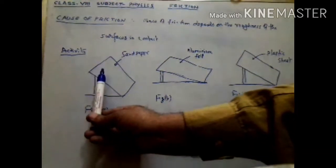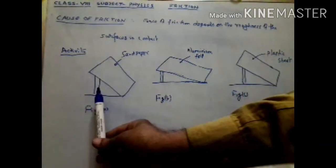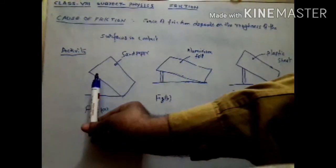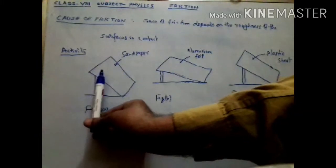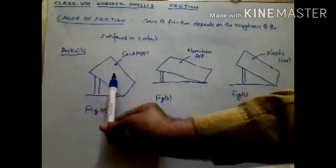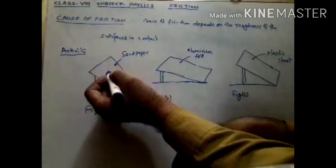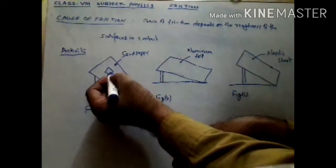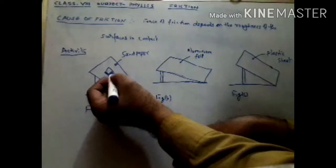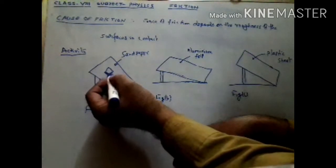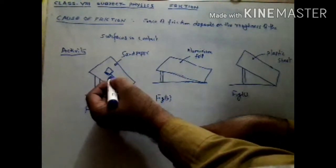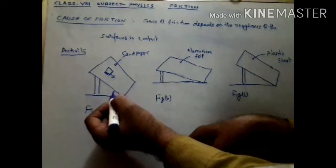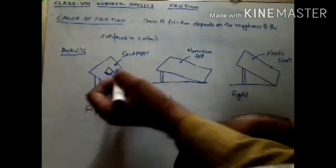We incline the wooden tray. So when we incline the wooden tray from this side, up to a level when the mesh box starts sliding — at that position we observe the angle of inclination, or this height.